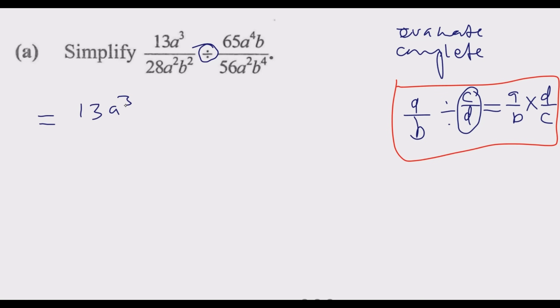So let us proceed: 13a³ over 28a²b² then multiplication. Then this comes down, this one goes up. So we have 56a²b⁴ over 65a⁴b. At this point everything becomes easier.